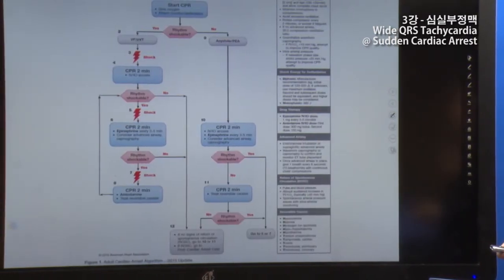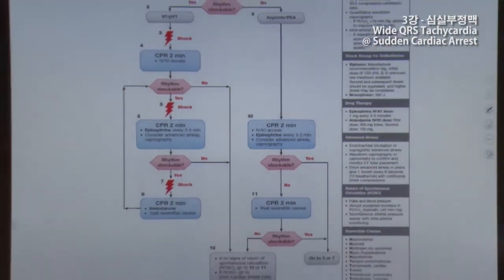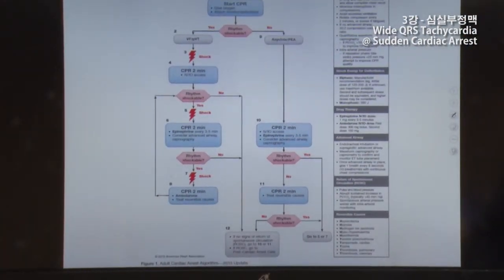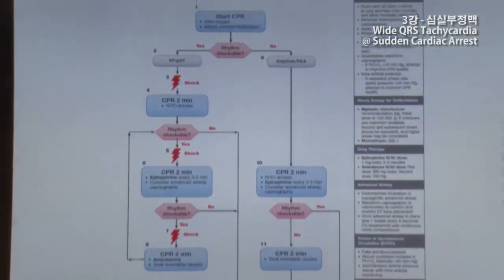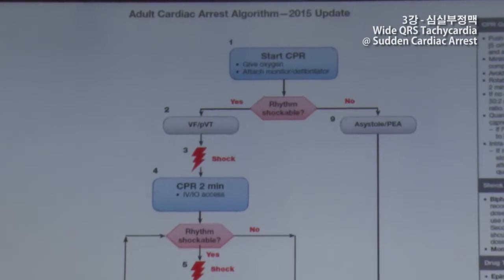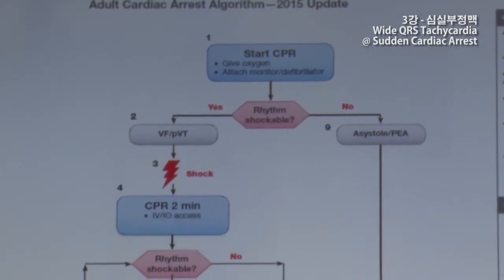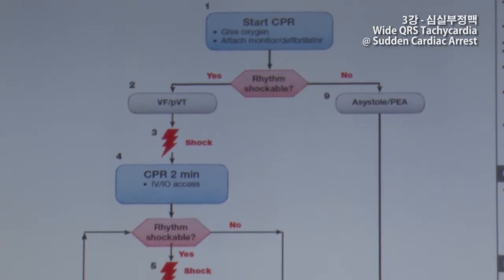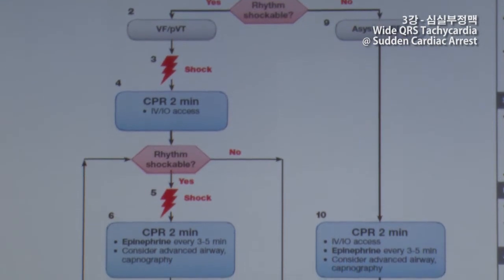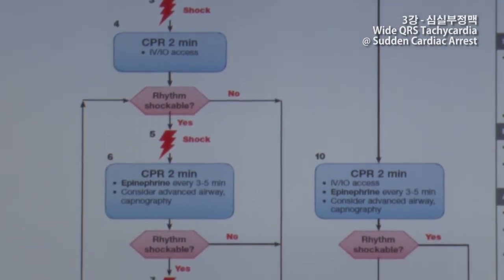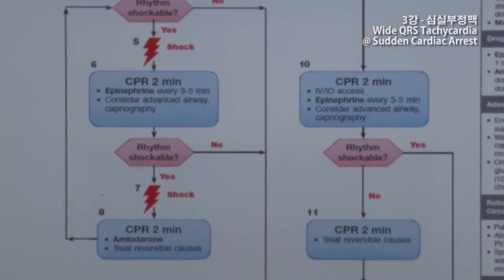The answer is 1. It is a wide QRS tachycardia. The first algorithm is Tachycardia with Pulse. When the pulse is present with tachycardia, DC cardioversion is the best. But if the blood pressure is not stable, it follows the cardiac arrest algorithm.